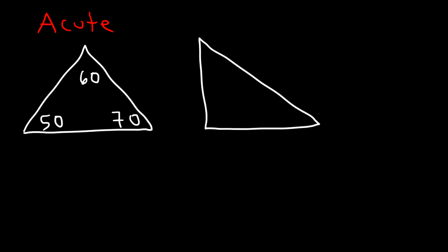The next type of triangle that you need to be familiar with is the right triangle. The right triangle contains one angle that is equal to 90 degrees. It's the angle represented by the blue box.